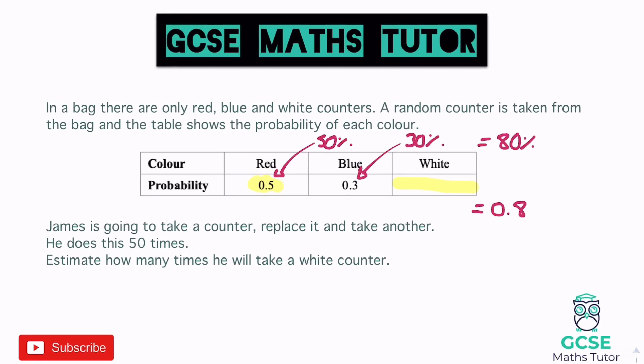So the probability of white is 0.2, or 20%. All probabilities have to add up to 1, or 100%. The reason I think in percentages is it helps further down the line. Since white is 20%, we would expect him to take a white counter 20% of the time out of 50 trials.